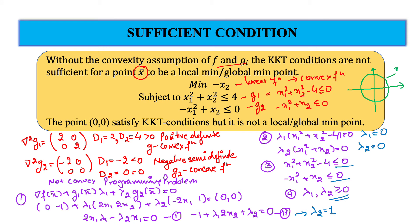Similarly, using the second constraint equation, G2 is a parabola of X1 squared passing through the origin. Putting the point (2, 0) gives minus 4 plus 0 equals minus 4, which is less than 0. So the region below the parabola is the feasible region for G2. The common feasible region in this graph is inside the circle and below the parabola.